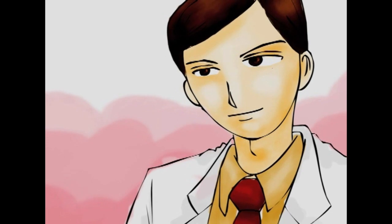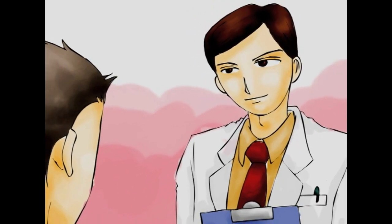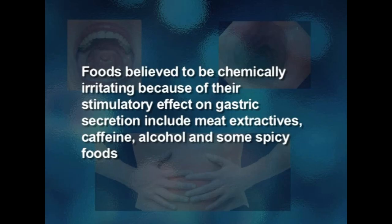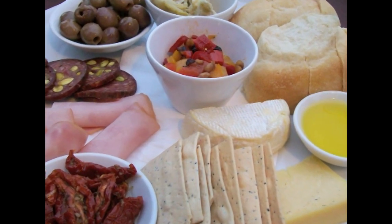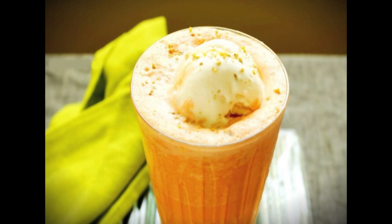Now we will look at dietary management. It was customary to suggest a bland diet for ulcer patients. A bland diet is one which is mechanically, chemically, and thermally non-irritating. Mechanically irritating foods include those with indigestible carbohydrates such as whole grains and most raw fruits and vegetables. Foods believed to be chemically irritating because of their stimulatory effect on gastric secretion include meat extractives, caffeine, alcohol, and some spicy foods. Foods that are thermally irritating are those served at extremes of temperature, such as very hot or icy liquids, which may cause pain.